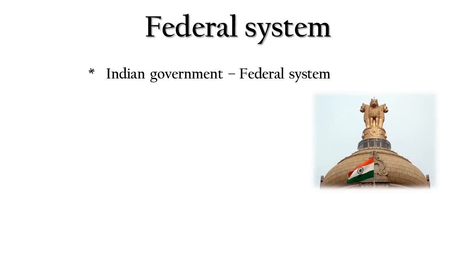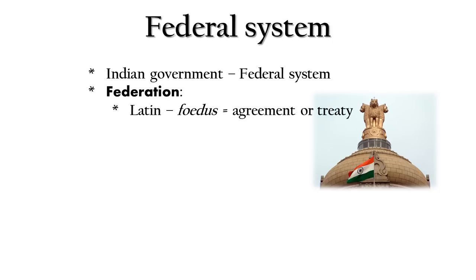Before knowing what a federal system is, we will first learn about federation. Federation is a word taken from the Latin word 'Fides', which means agreement or treaty. Federation is of two types: integration and disintegration.